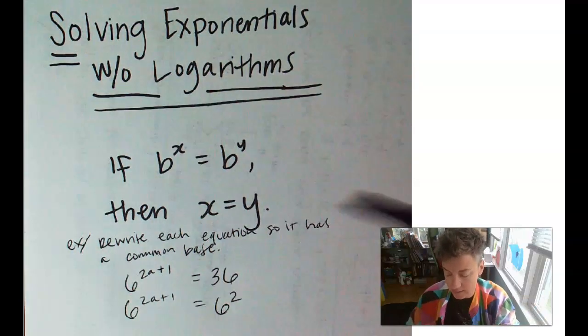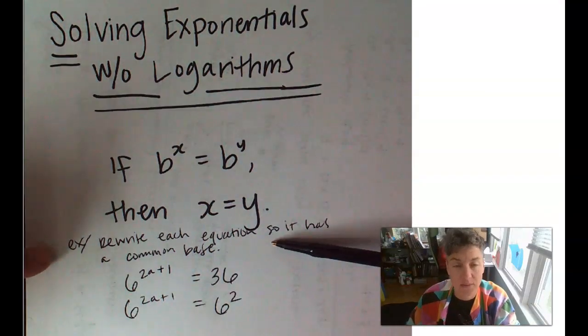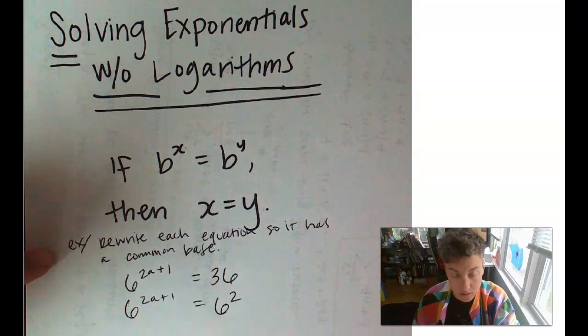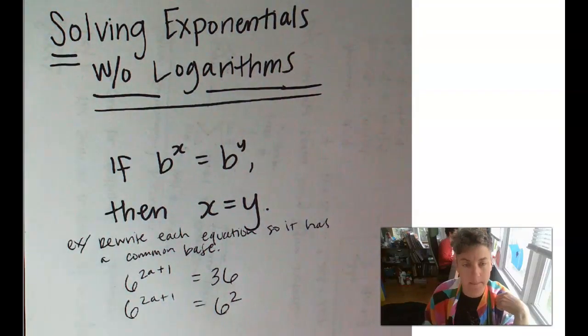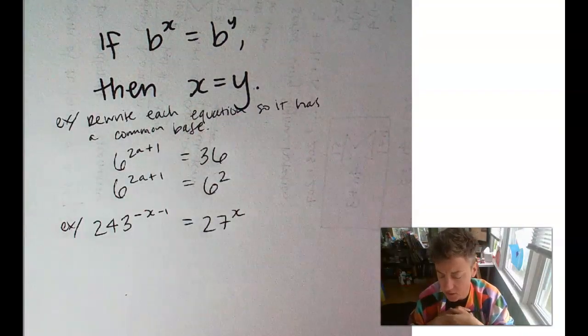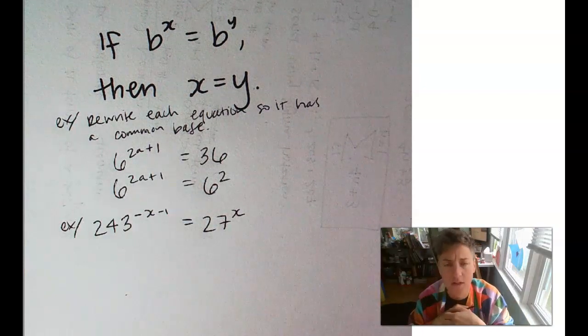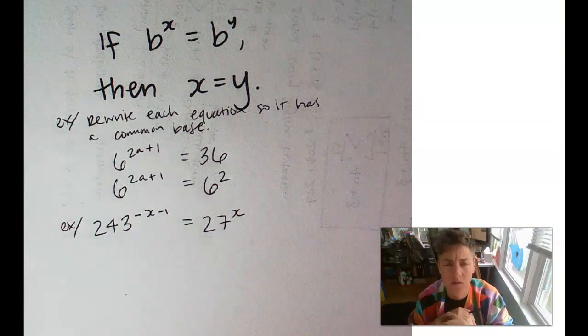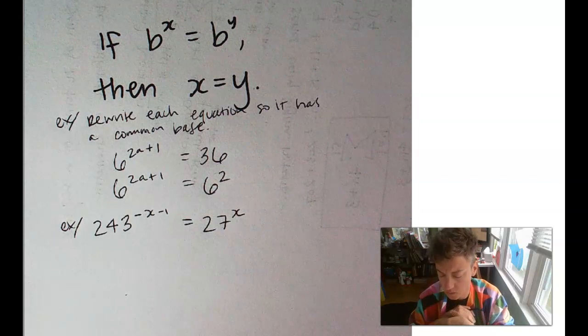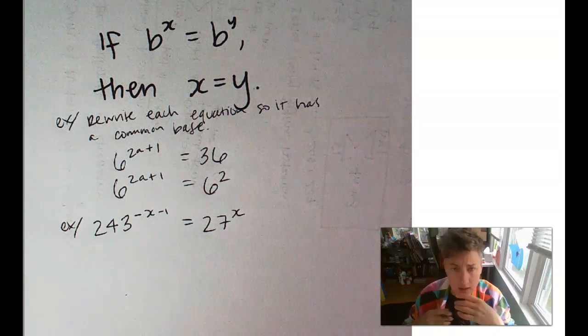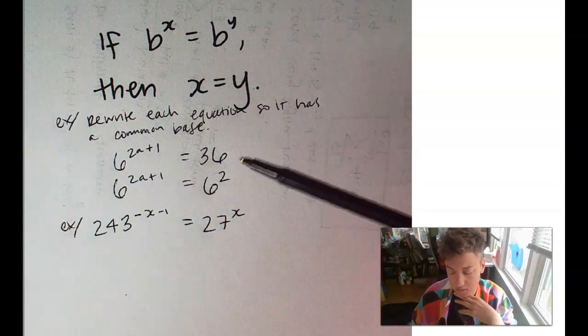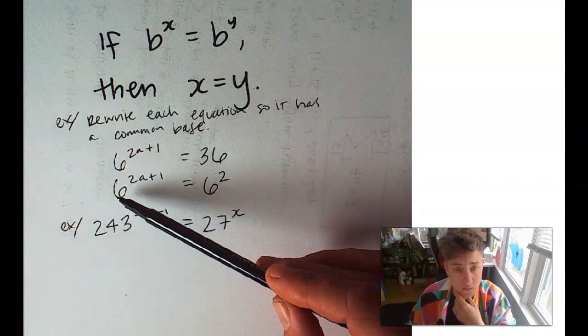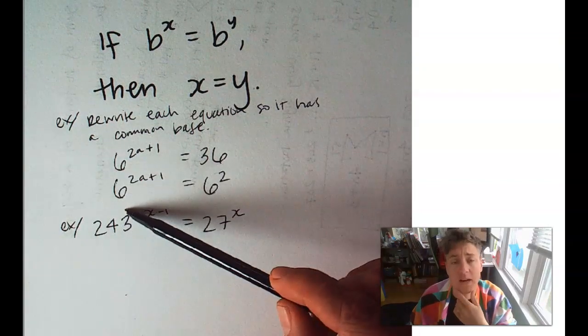However, let's go back and do two more examples where we rewrite the equation so that it has a common base. Here's our next one. A little bit trickier. We've got 243 to the negative x minus 1 equals 27 to the x. Not quite as simple as the last one, because in the last one, we had a base that was really obvious right away.